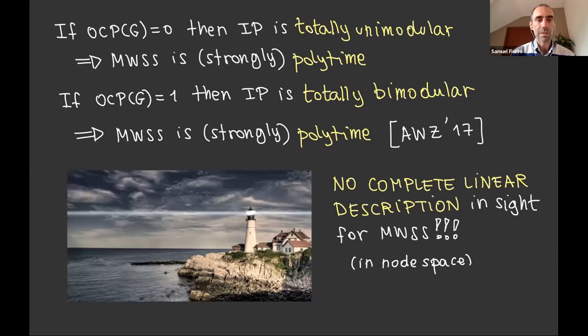So what this is telling us is that if the OCP is zero, the graph is bipartite and the IP is totally unimodular. Then we can solve it in polynomial time. And actually it's strongly polynomial time since the coefficients are small. And the next case is when the OCP is one and until very recently, this was open.